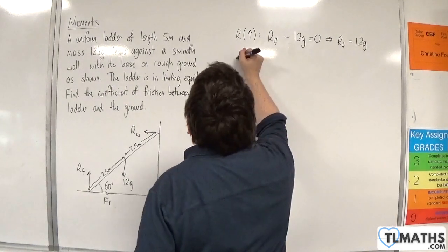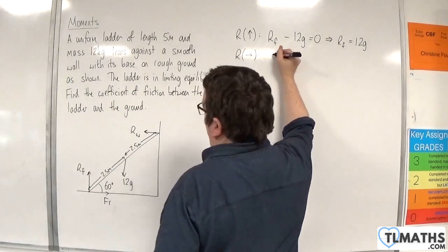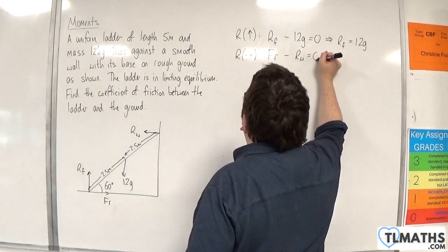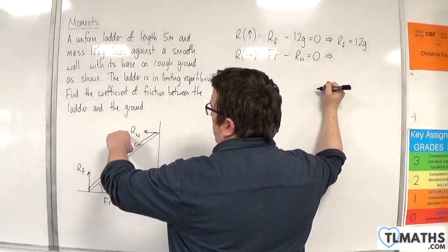If we resolve horizontally, taking to the right as positive, we have the friction, take away Rw, must be 0. So friction and the Rw.